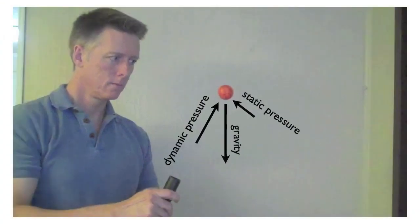So that means that the static pressure is pushing up into the left. The dynamic pressure is pushing up into the right. Gravity is pulling down. The ball is in balance.